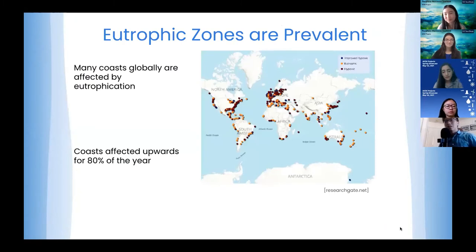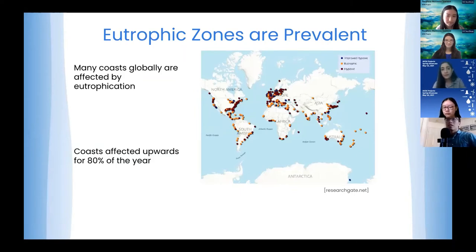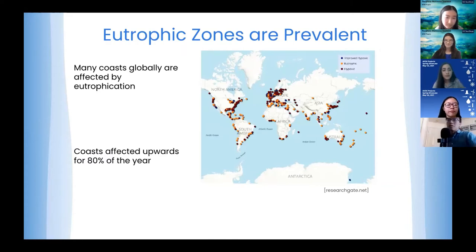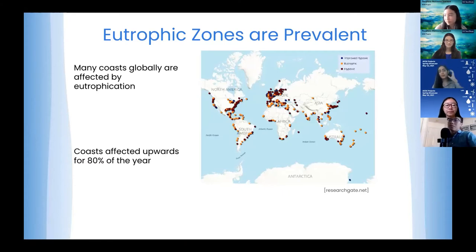Eutrophic zones are occurring mostly in developed nations. On the map, the orange dots represent eutrophic zones — the US has them on both coasts, as well as Europe and Asia. Eutrophication doesn't just happen from large nutrient dumps; it's happening year-round, up to 80% of the year. That's where we hope to address this issue locally for San Diego.